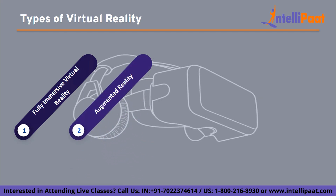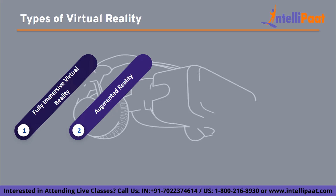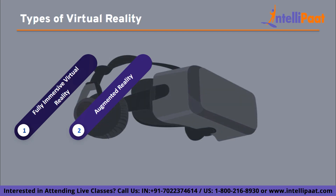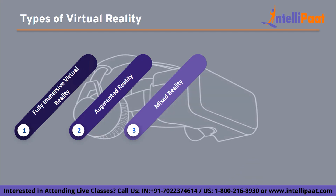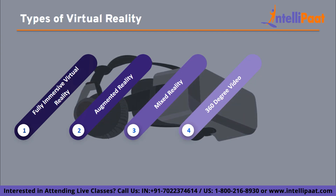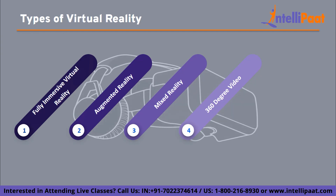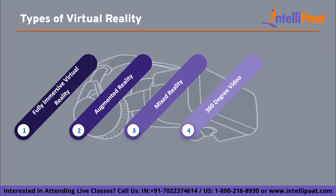Next we have augmented reality. Unlike fully immersive VR, augmented reality does not replace your surroundings but adds virtual elements to your real world. Using smartphones, tablets, or smart glasses, you can see computer generated images overlaid on your real environment. Next we have mixed reality. Mixed reality combines elements of both virtual reality and augmented reality, seamlessly blending virtual objects with the real world, allowing you to interact with both. 360 degree video: while not strictly virtual reality, 360 degree videos provide an immersive experience. These videos capture scenes from all angles, allowing you to look around and explore the environment using a VR headset, computer, or mobile device.